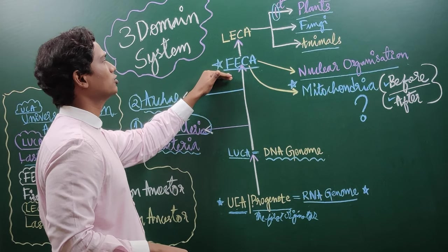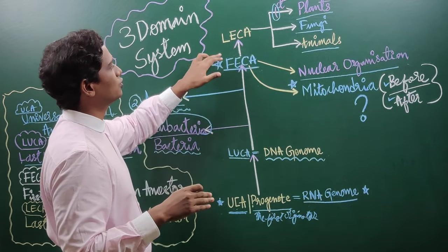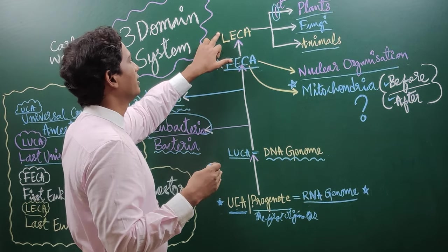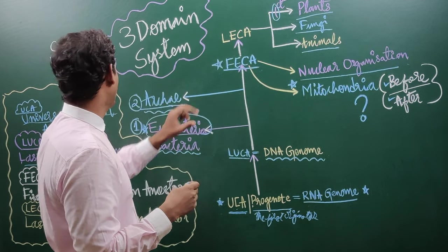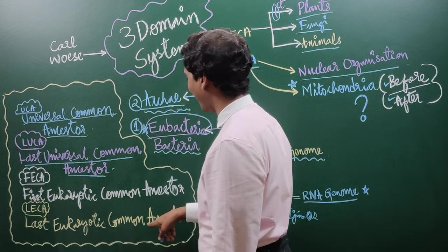After FECA, FECA slowly started progressing and stretching its legs and gave rise to one more level that is called as LECA. LECA means last eukaryotic common ancestor.